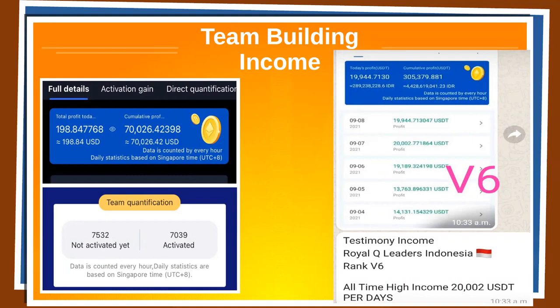In six months, this person built a team of 7,039 people — with 7,592 not yet activated — and earned seventy thousand US dollars. And on the right side, someone who reached the highest level of Royal Q also gets a percentage of global sales of the company, which means incredible income — this gentleman is earning between 15,000 to 20,000 dollars per day.